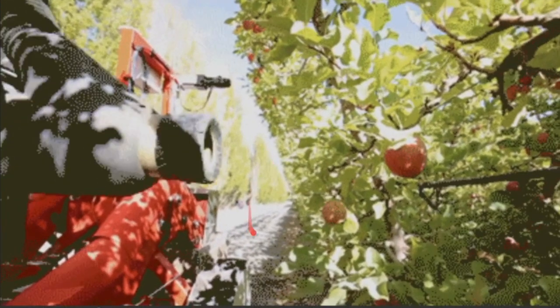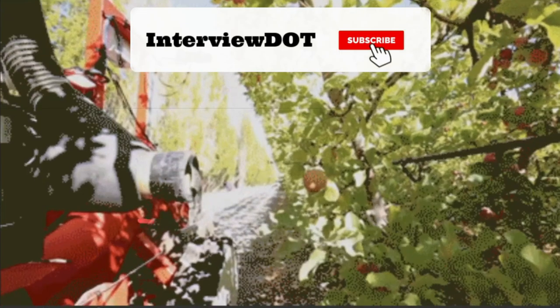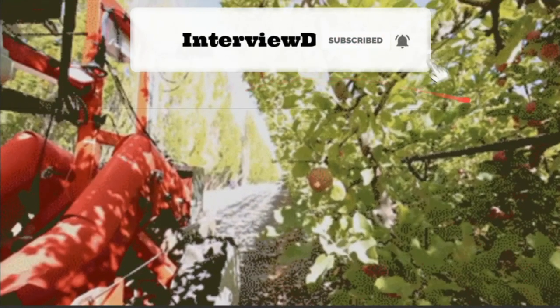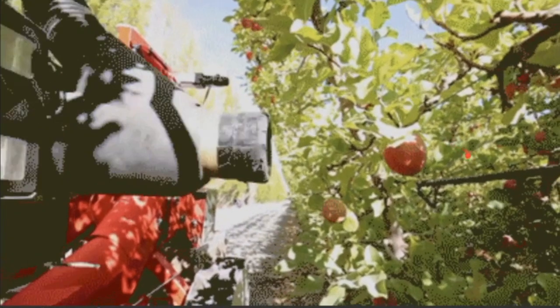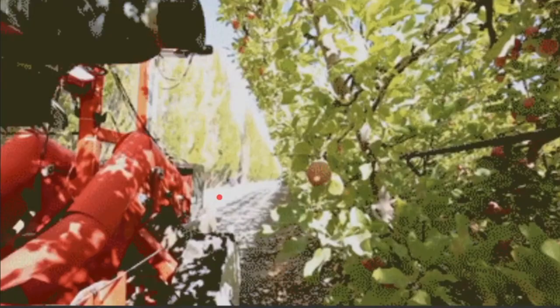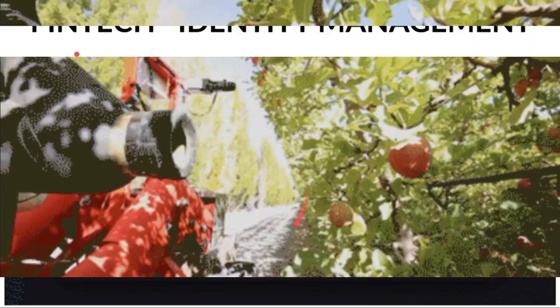The next industry is agriculture. In this example, there's a vehicle with an attached camera that can identify objects like apples. It has to identify which fruit is ready for the market and pick them. This is one example of applying computer vision in agriculture.